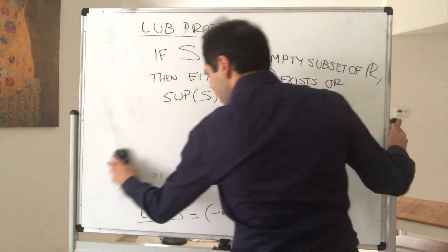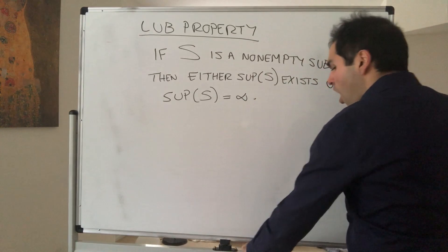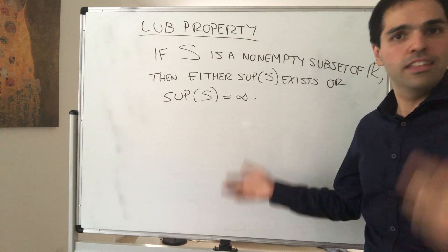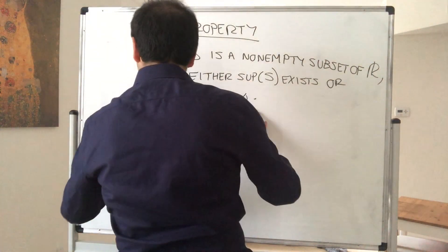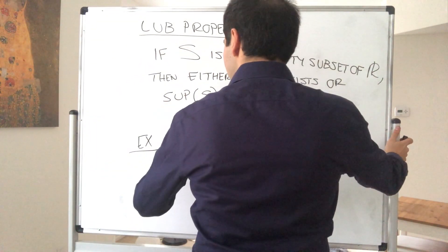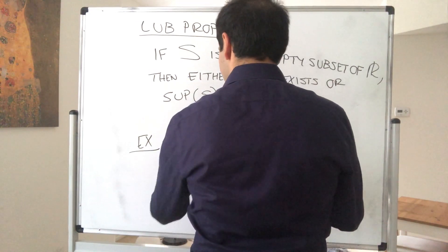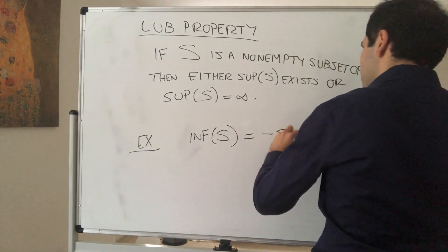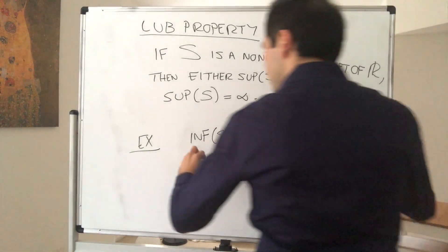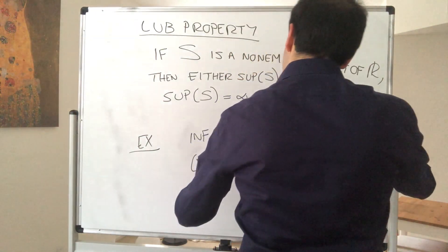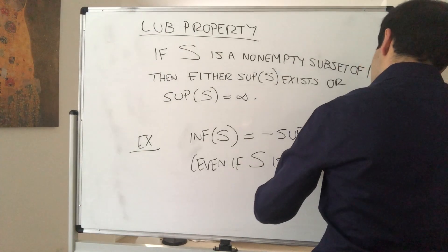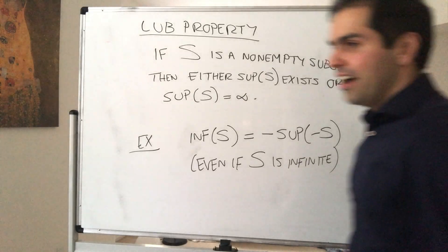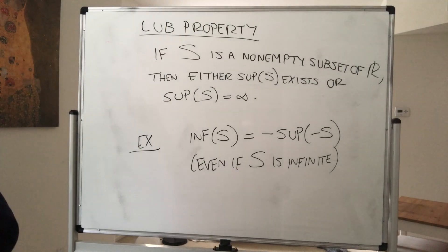And not only that, the nice thing is, all our other properties that we've shown, they work even if the supremum is infinite. For instance, even with this extended definition of supremum, we still get that the infimum of S is minus the supremum of minus S. Again, even if S is infinite. Meaning not bounded, let's say from above or below. So you see, and that's why it's a nice extension of the definition.